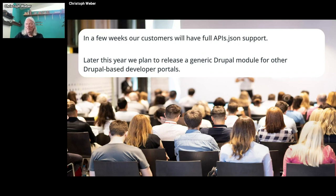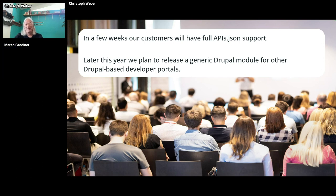My claim is: if we output structured data about our API operation, we can be part of the solution — or else we leave it to chance and hope for the best. One more thing: in a few weeks our own customers will have full APIs.json support — we're actively building this right now. Later this year we plan to release a generic Drupal module for other Drupal-based developer portals so they too can output APIs.json data. It's not a hard format to get your mind around — you can also hand-build it — but some tooling help is obviously useful, so we're going to build it for you.